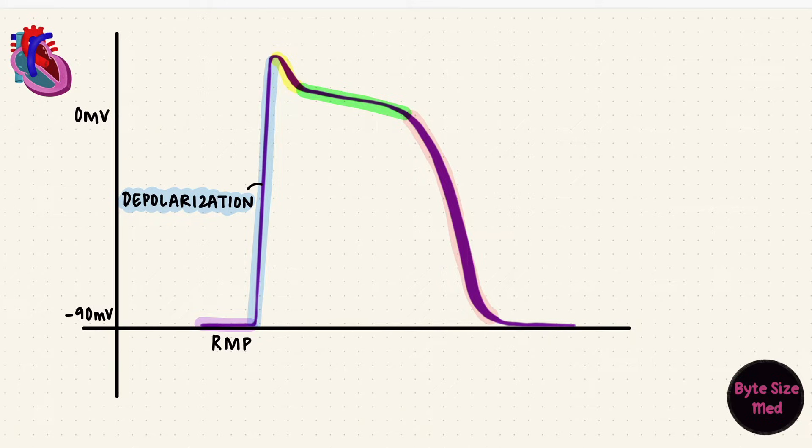The slight dip after is repolarization. But then there's a sustained period of depolarization. That creates the plateau.